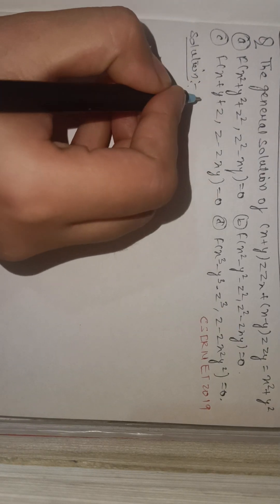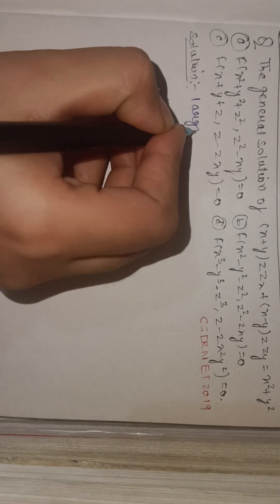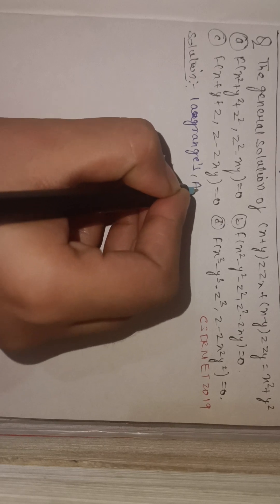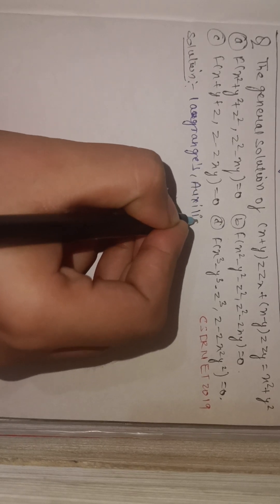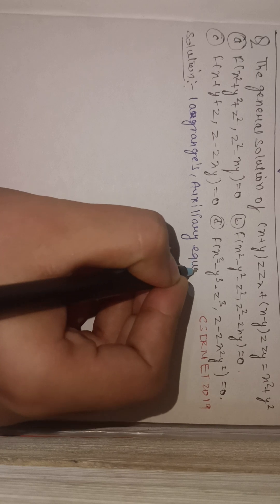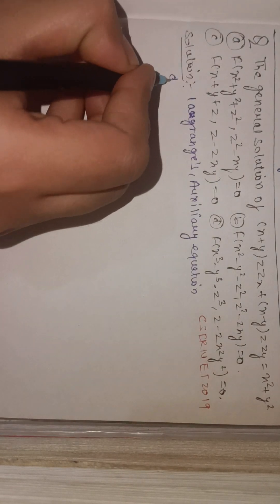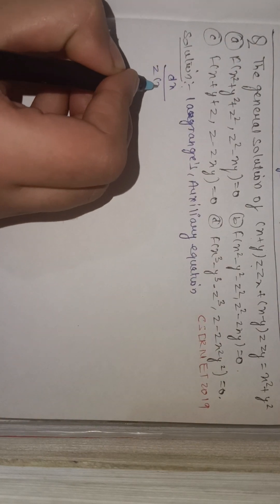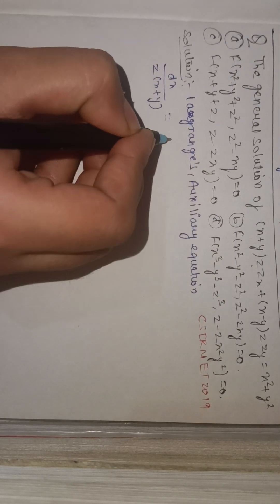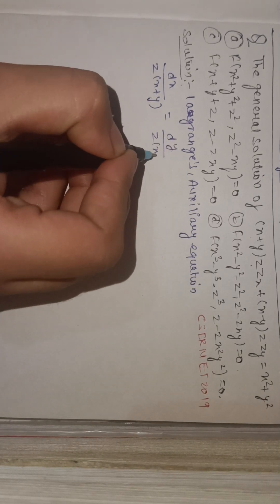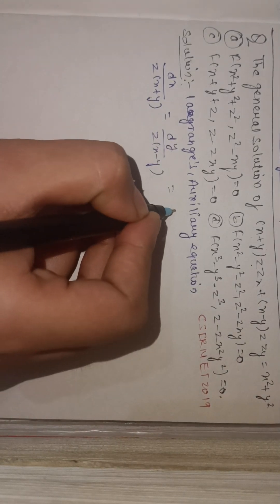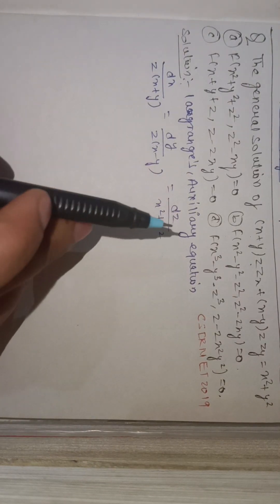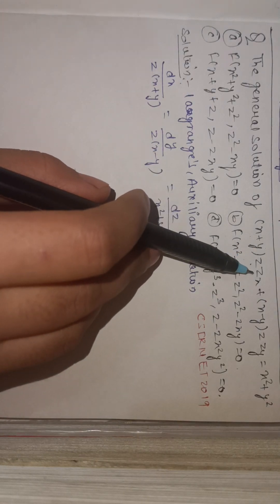First, we have to convert this differential equation into the Lagrangian auxiliary equation. The Lagrangian auxiliary equation is: dx / [z(x+y)] = dy / [z(x-y)] = dz / (x² + y²).